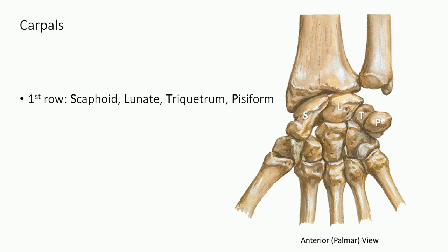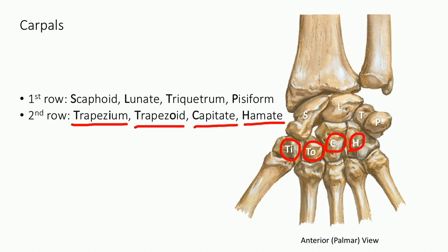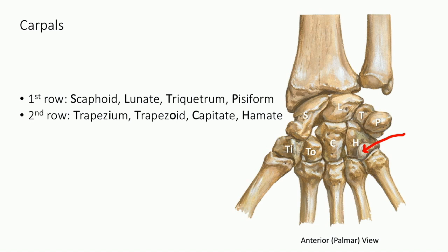The second row of carpal bones, again from lateral to medial: the trapezium, the trapezoid, the capitate, and the hamate — the most medial bone. Associated with the hamate is the hook of the hamate, a projection that looks like a hammer handle, useful as a landmark in lab. These eight bones constitute the carpal bones of the wrist.